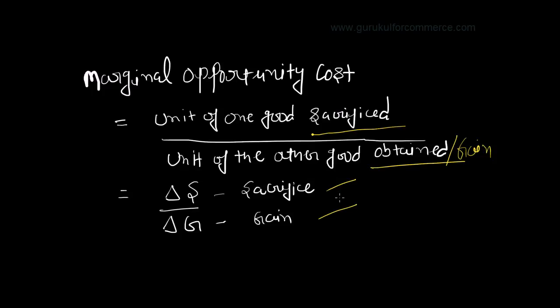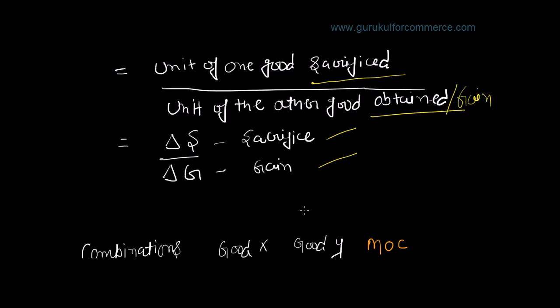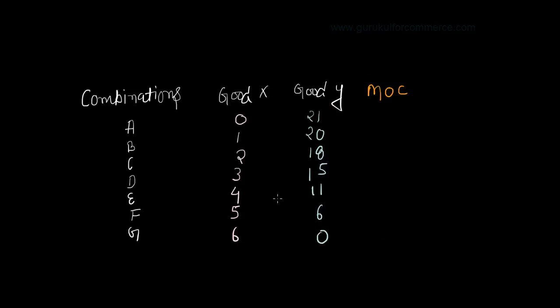We are computing marginal opportunity cost in order to understand the working of the production possibility frontier, or the production possibility curve. Let us go through a numerical illustration which will help us understand the concept better.